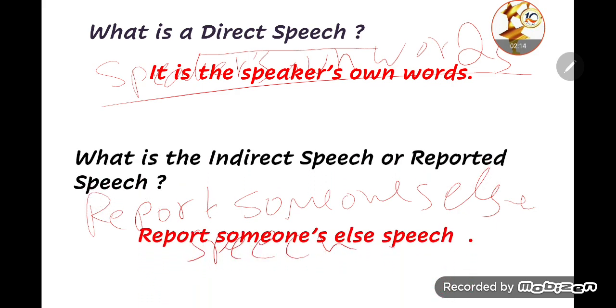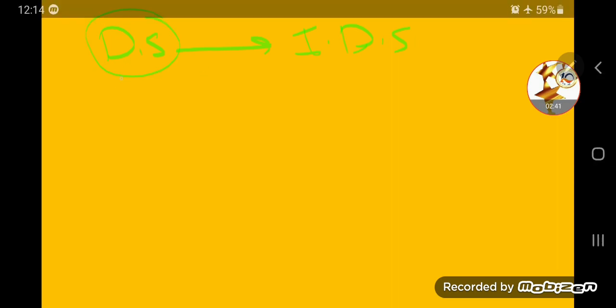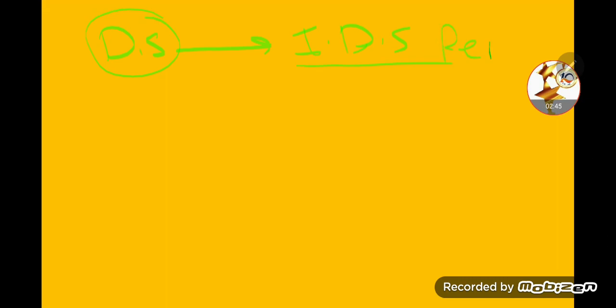When we want to change from direct speech to indirect speech, this is what we mean by direct speech and indirect speech, or reported speech. So when you are speaking your own words, that is direct speech. Indirect speech — also called reported speech — is when we report what someone else said.